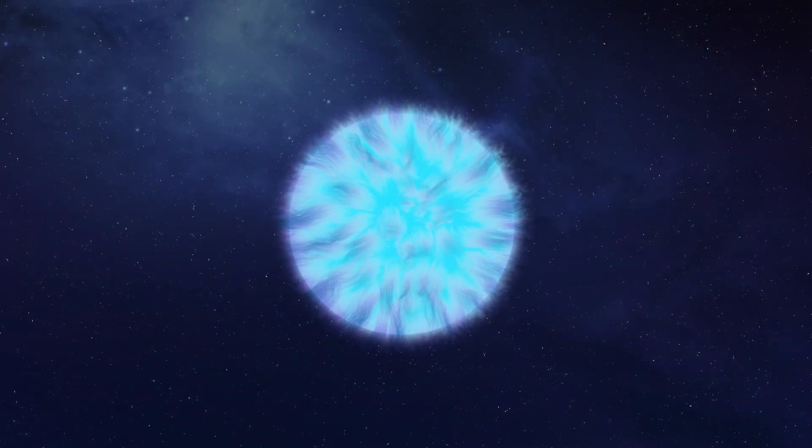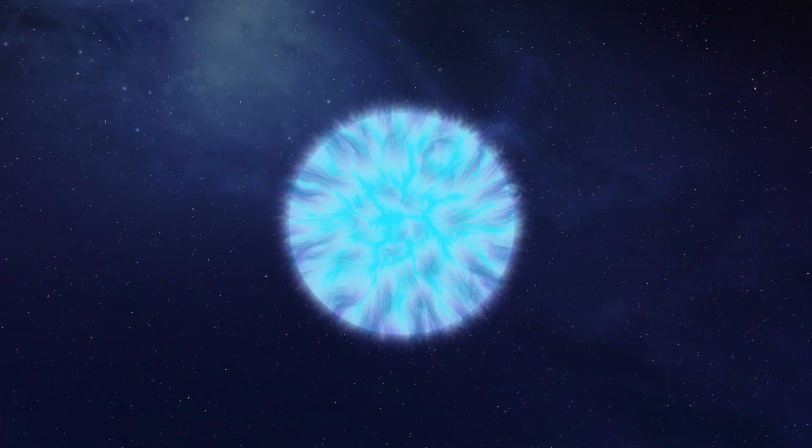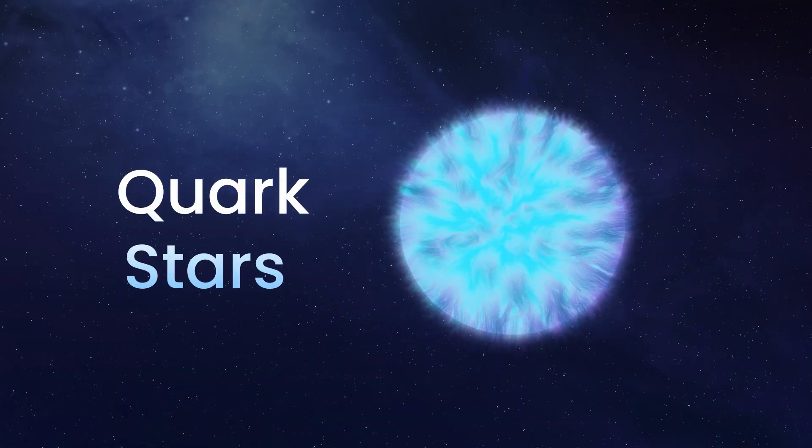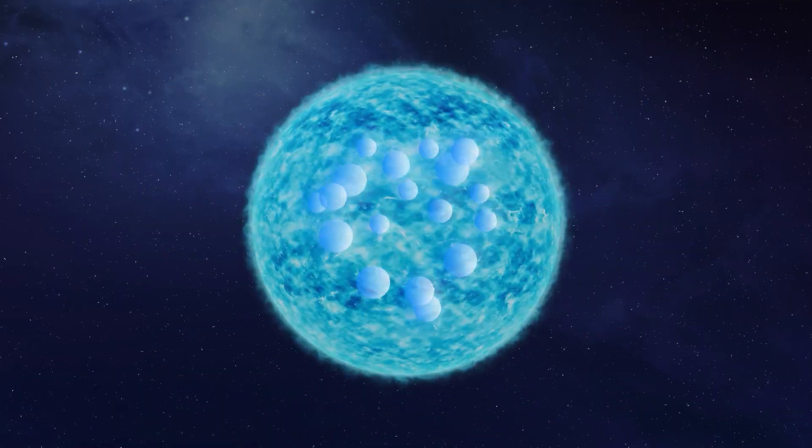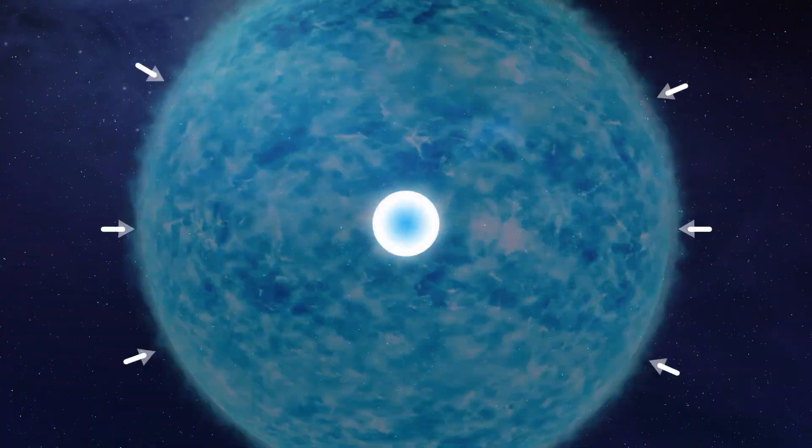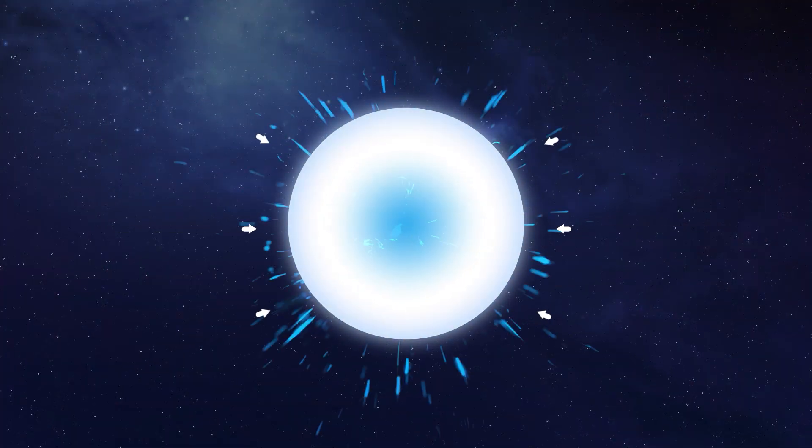Number 4: Quark stars. Next, we have an object made of the strangest stuff imaginable. Imagine a star so crushed by gravity that atoms collapse into neutrons. Now imagine it being squeezed even more, until even neutrons break apart into their building blocks: quarks.